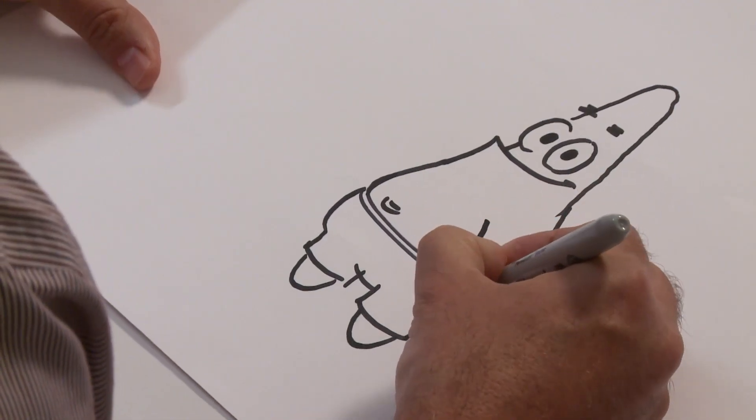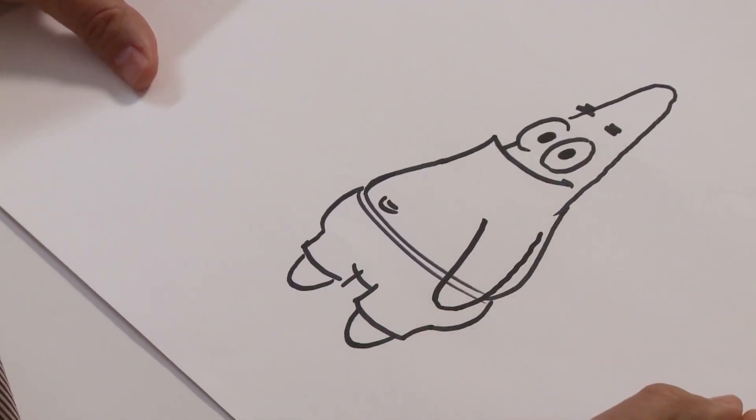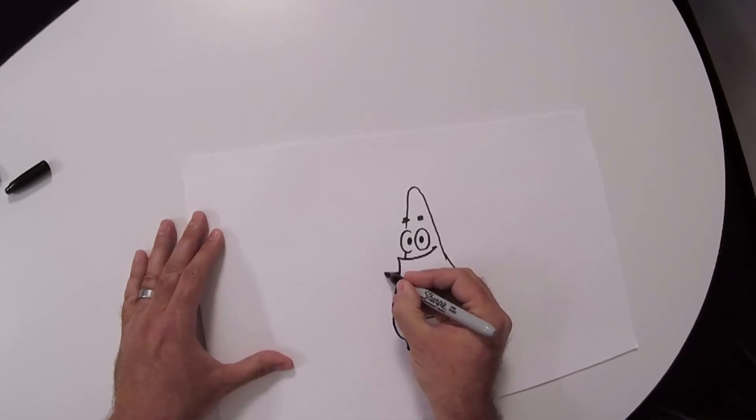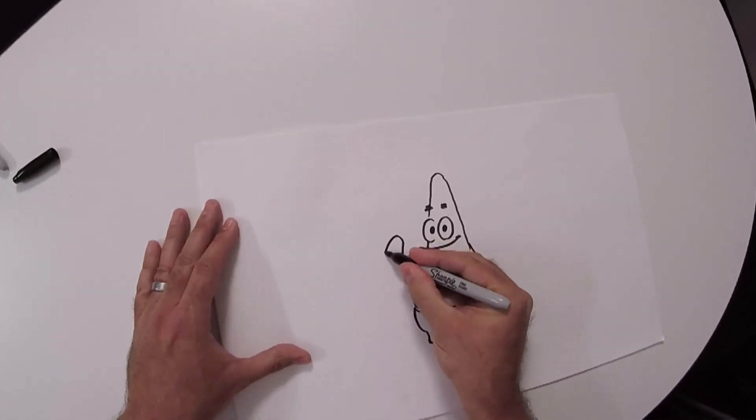Now we'll draw his arm, which again is kind of like a flipper in a way. And then we'll draw his other hand up here, waving at everybody.